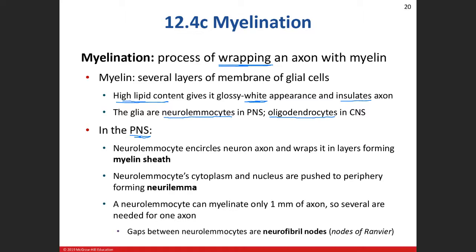An interesting fact is that these neural lemma sites can only myelinate one millimeter of an axon. Some neurons can span the entire length of your arm or your leg, so imagine how many neural lemma sites are going to be along that axon, and how many thousands of axons will be found in a nerve fascicle, and how many nerve fascicles make up a nerve.